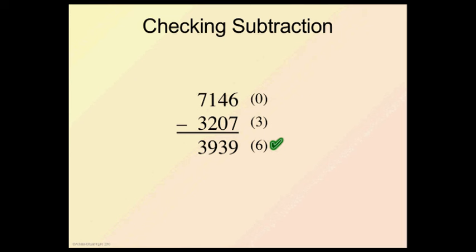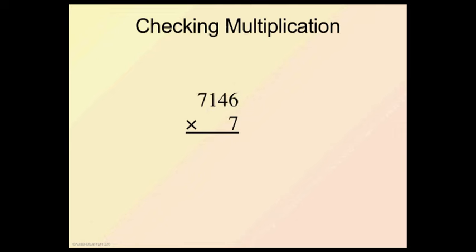Let's go and see what this looks like for multiplication. 7,146 times 7. Here's my answer, 50,022. Check numbers. Of 7,146 is 0. Check number of 7 is 7. That's pretty easy. Check number of my 50,022. So here I've got 5, 7, 9. 9 is 0. So my check number is 0. Now here, we're going to multiply the check numbers. So 0 times 7 is 0. Check.